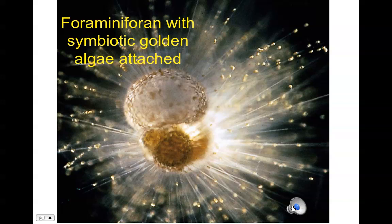Here's another example of a symbiotic relationship. Those little tiny golden structures on long tendrils are golden algae that have developed a symbiotic relationship with a foraminifera — a little roundish structure with long tendrils on the outside. The golden algae live inside the shell and along the tendrils, gathering and sharing nutrients with the foraminifera, and the foraminifera benefit from all those nutrients.